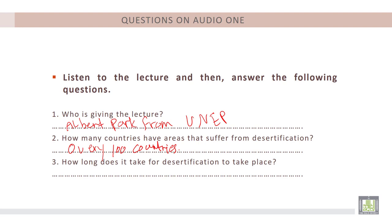Question number two. How many countries have areas that suffer from desertification? According to Mr. Albert, there are over 100 countries. Question number three. How long does it take for desertification to take place? Again, according to Mr. Albert, it takes many years. And sometimes, or in some cases, centuries.